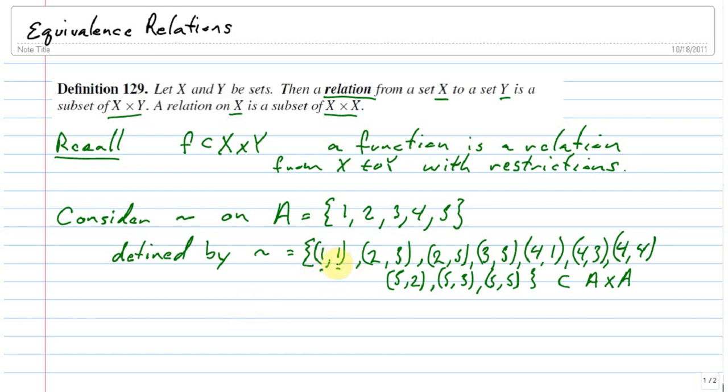Now how do we read these? Each ordered pair gives us a relation, so another way to read this is one is related to one, two is related to three, two is also related to five, three is related to five, four is related to one, four is related to three, four is related to four, five is related to two, five is related to three, five is related to five. So this gives us a relation on this set.